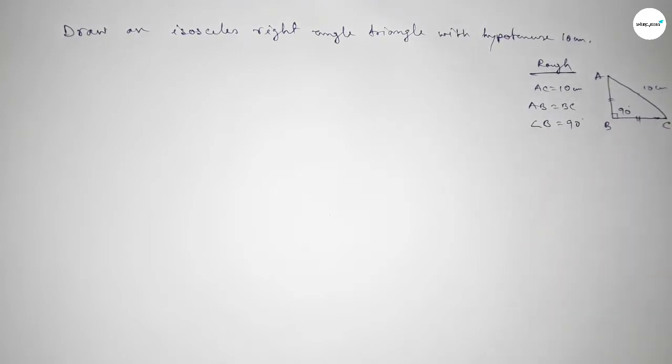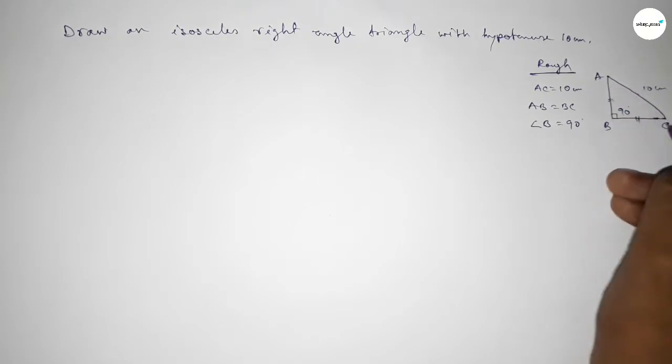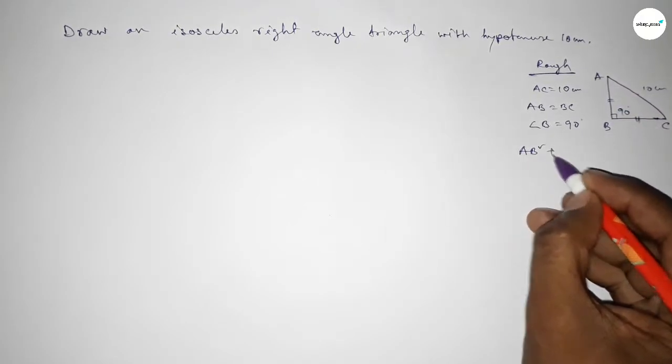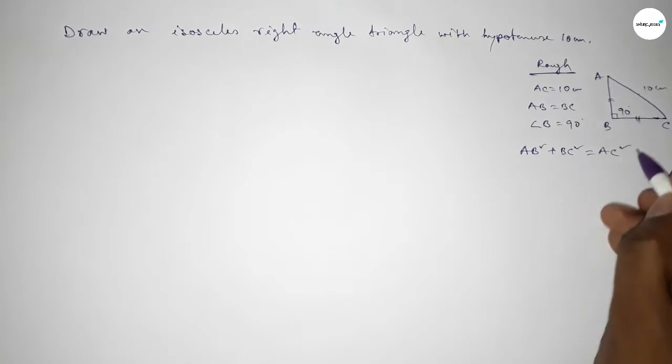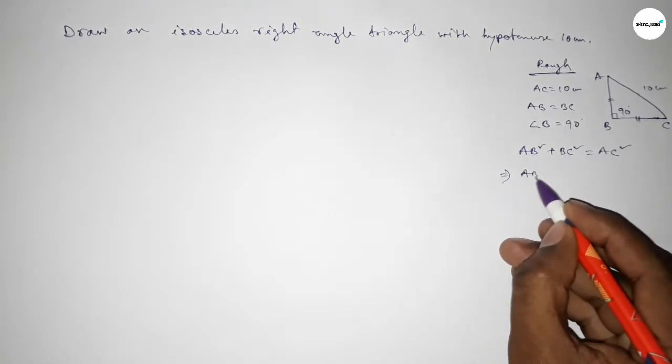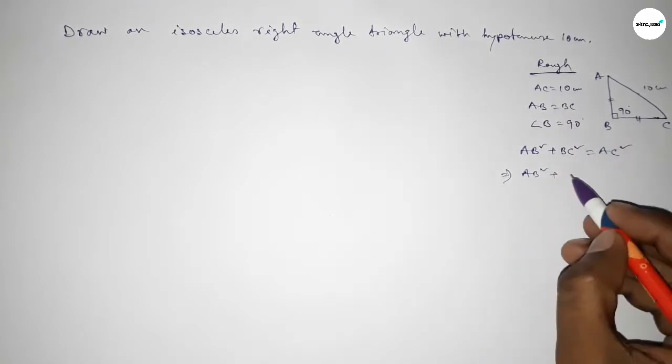Then by Pythagoras theorem we can say that height squared plus base squared equal to hypotenuse squared. So AB squared plus BC squared equal to AC squared, implies that AB squared plus this is equal to AB.